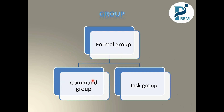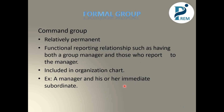In Formal Groups, there are two divisions: Command Group and Task Group. The Command Group is relatively permanent. It involves functional reporting relationships, such as having a group of managers and those who report to the manager — two relationships. One is a group manager whom we report to, and they also report to their managers. The Command Group is included in the organization chart and holds a relatively permanent position.